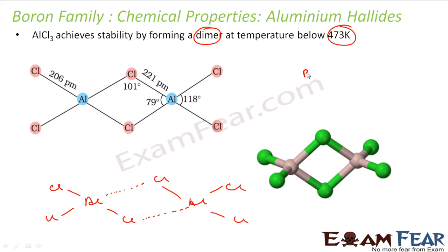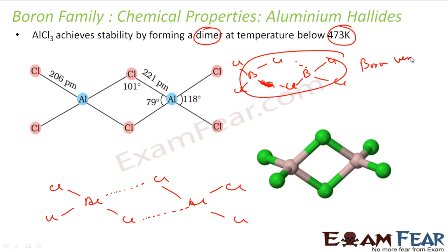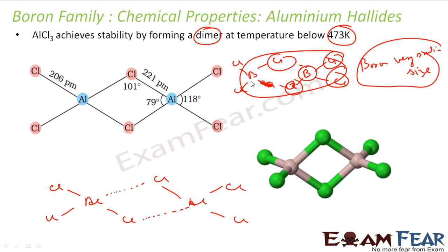Now the question is: why does boron not form this dimer structure? Boron also has the same problem — BCl3 also has 6 electrons. But BCl3 does not form a dimer because boron is very small in size and cannot handle 4 chlorine atoms around it. Since the central atom is very small, it cannot hold 4 atoms. So BCl3 does not form a dimer shape.